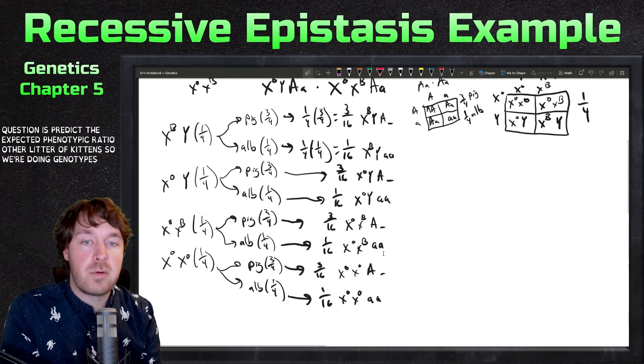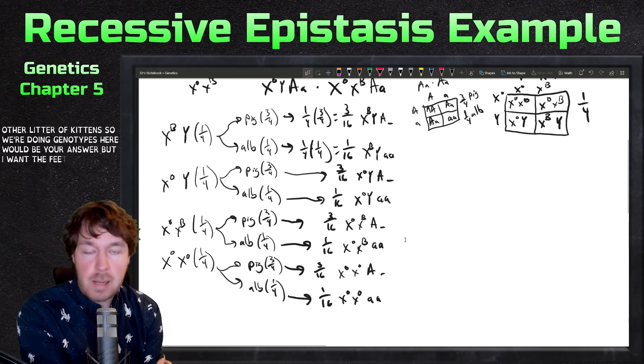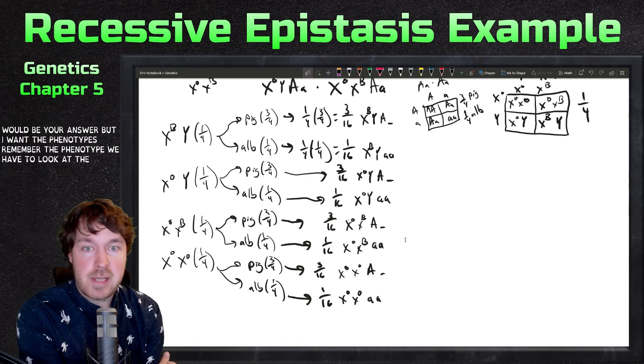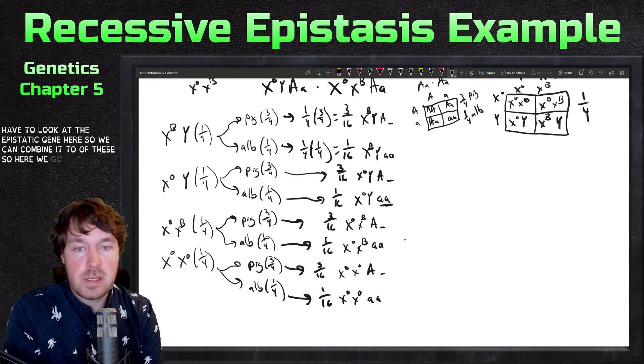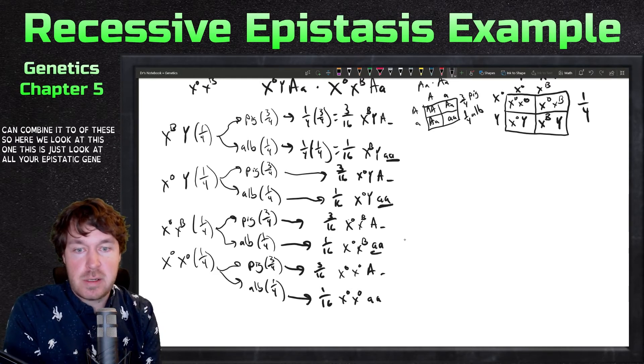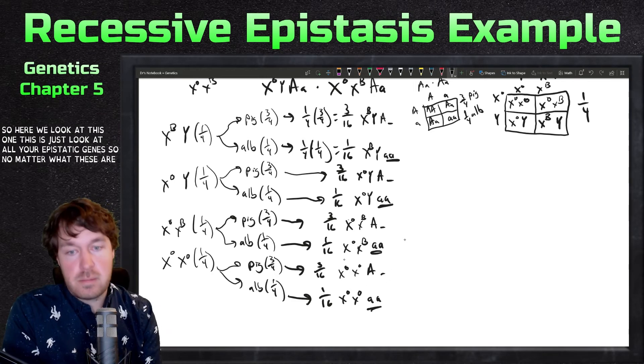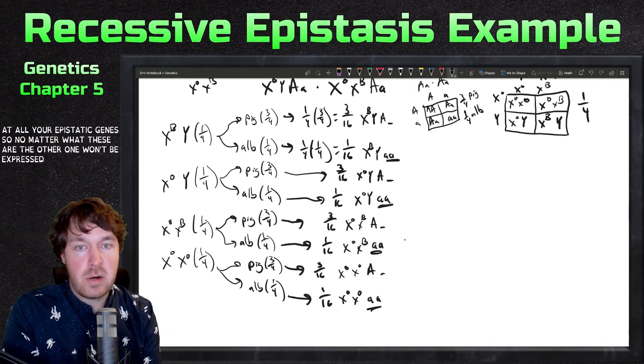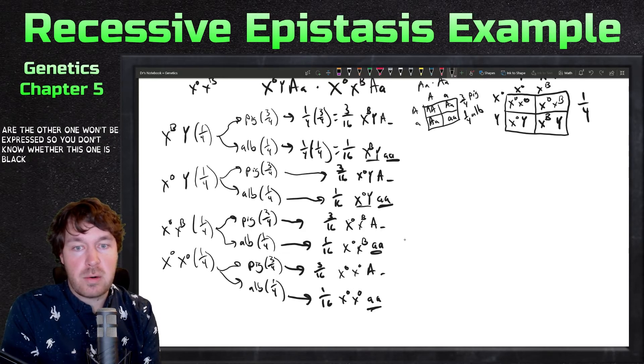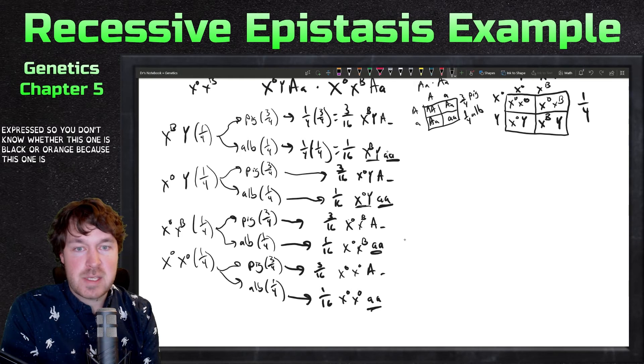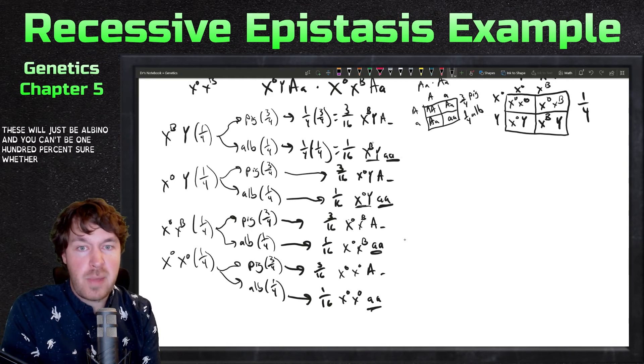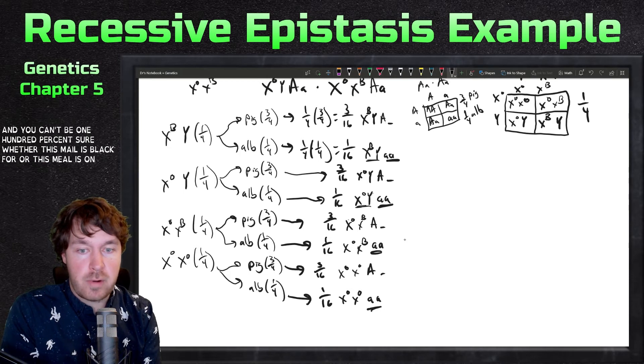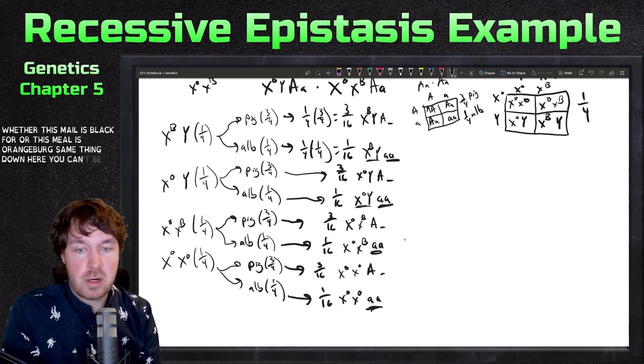If we're doing genotypes, here would be your answer, but I want the phenotypes. Remember the phenotype - we have to look at the epistatic gene here, so we can combine two of these. Look at all your epistatic genes. No matter what these are, the other one won't be expressed, so you don't know whether this one is black or orange because this one is epistatic. So there's epistasis at play here. These will just be albino and you can't be 100% sure whether this male is black fur or this male is orange fur.